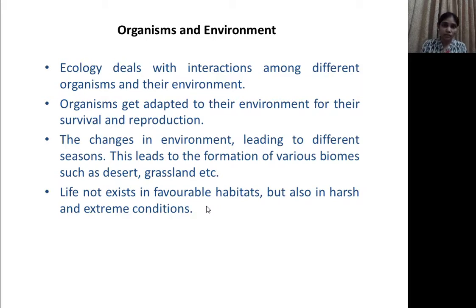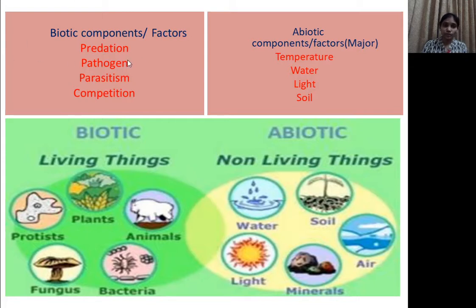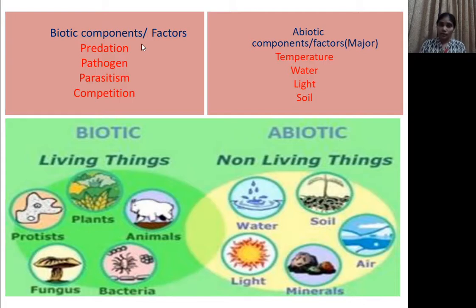In the environment, there are factors affecting living organisms. There are two environmental factors: biotic components and abiotic components. Biotic components include predation, pathogens, parasitism, and competition. Plants, animals, bacteria, and fungi are included in the biotic factor, and they significantly affect living organisms.